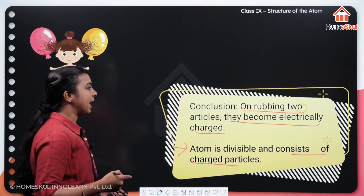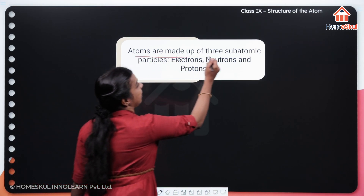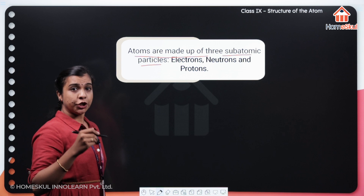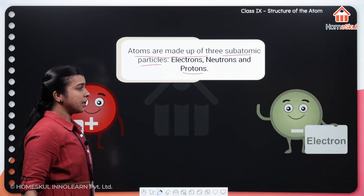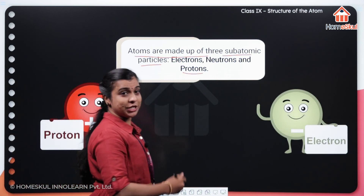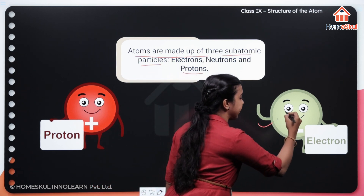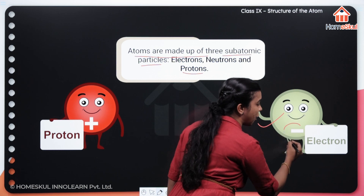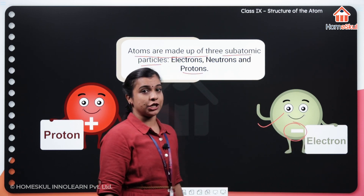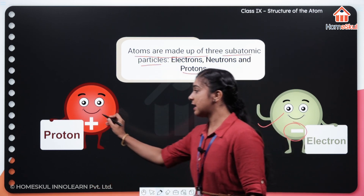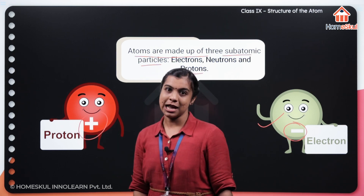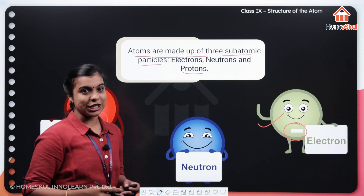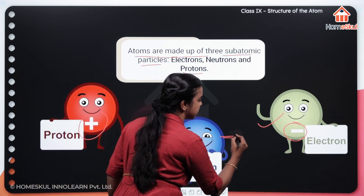Atoms are made up of three subatomic particles: electrons, neutrons and protons. You can see some images right here. This is your electron, and you can see a charge here — electrons are negatively charged. And what about proton? They are positively charged. And what about your neutron? They are chargeless — that is, charge is zero.